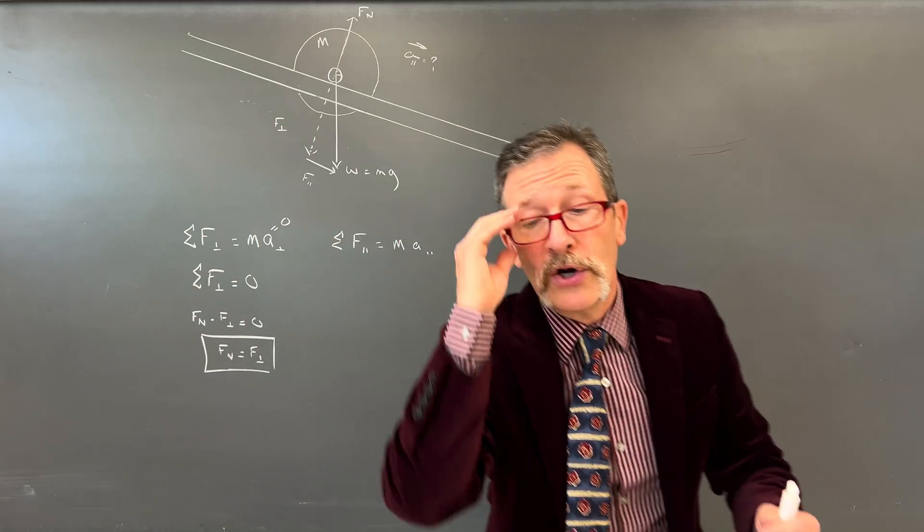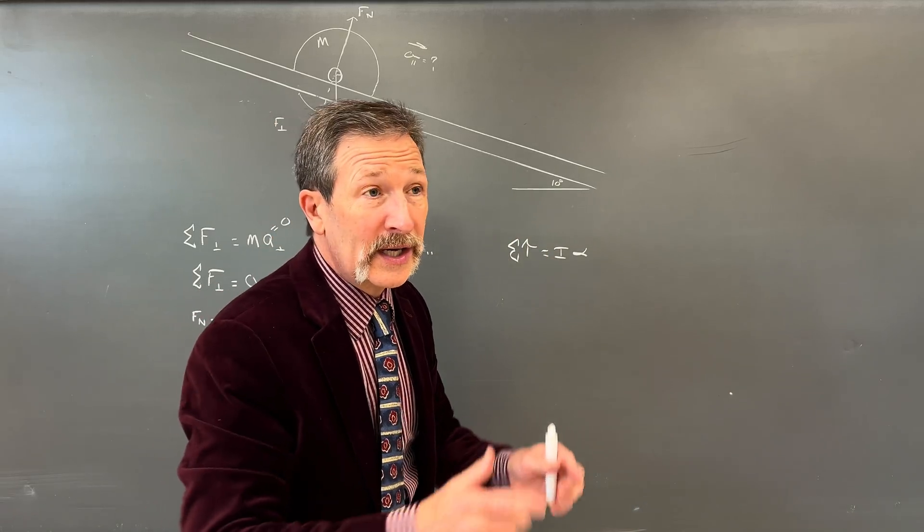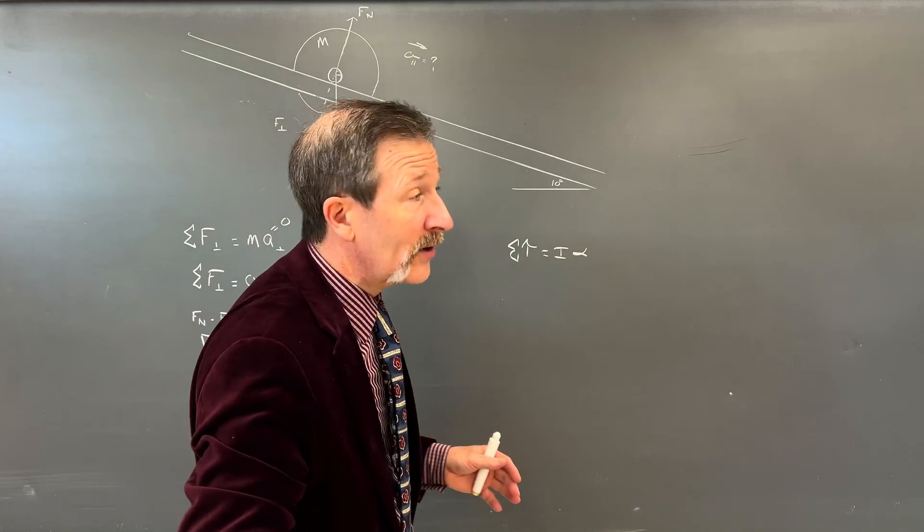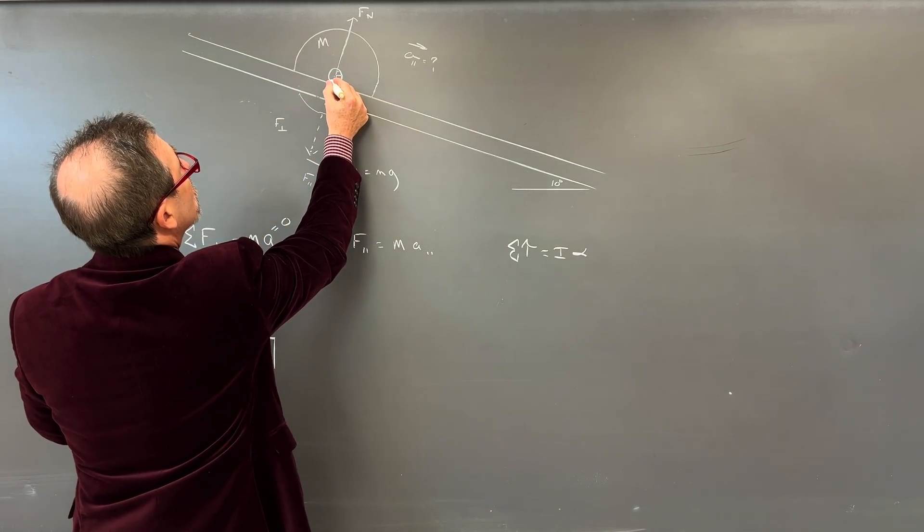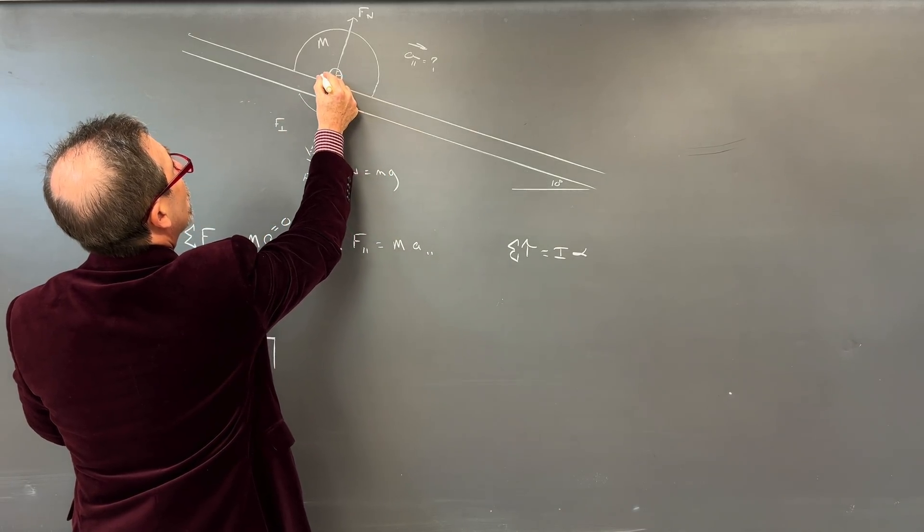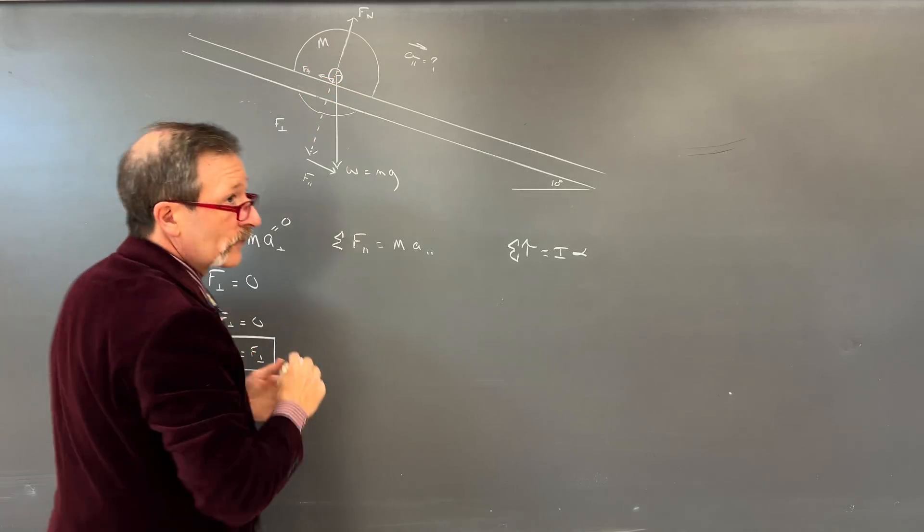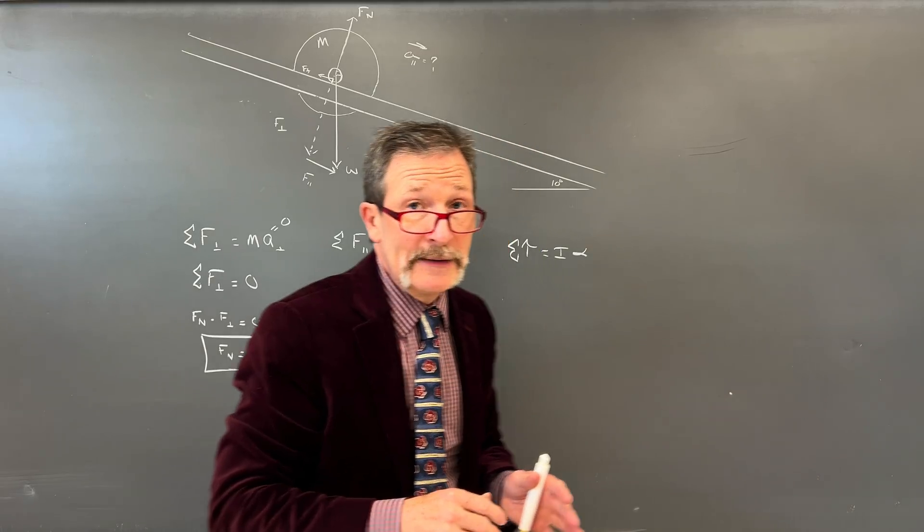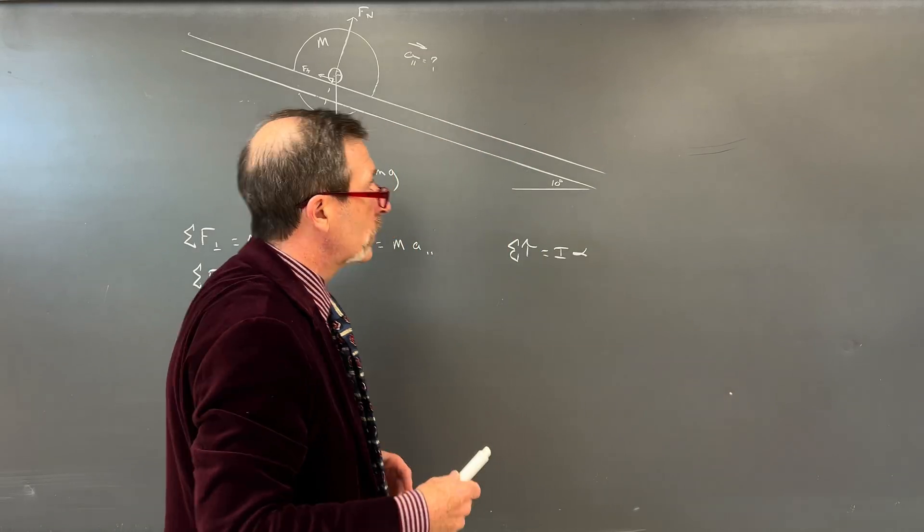In other words, I've got a force normal. So I'll write my force normal minus my force perpendicular equals zero, force normal equals my force perpendicular. Now, what really causes this thing to end up rotating? Well, we've got to have some kind of torque.